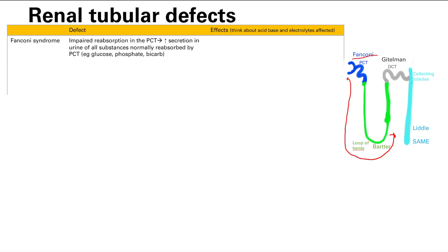Proximal tubules have a problem that we call Fanconi syndrome. Fanconi syndrome is due to impaired reabsorption — one of the key functions of the proximal convoluted tubule is reabsorption of water and different solutes. If you have impaired reabsorption in pretty much every single solute, you're going to have increased secretion of all of these, including things like glucose, phosphate, and bicarb.